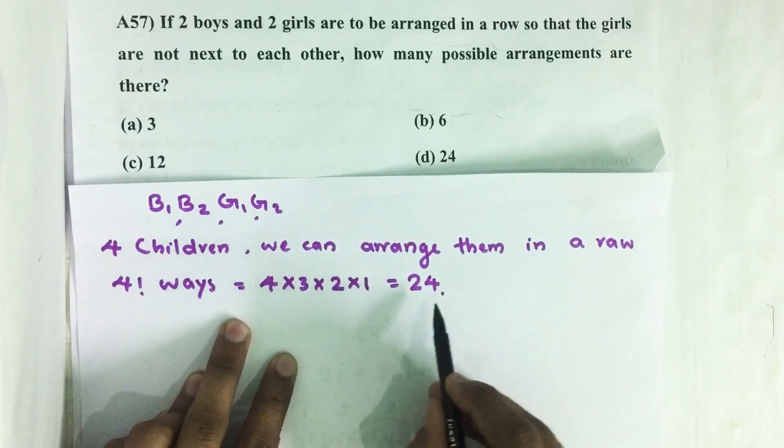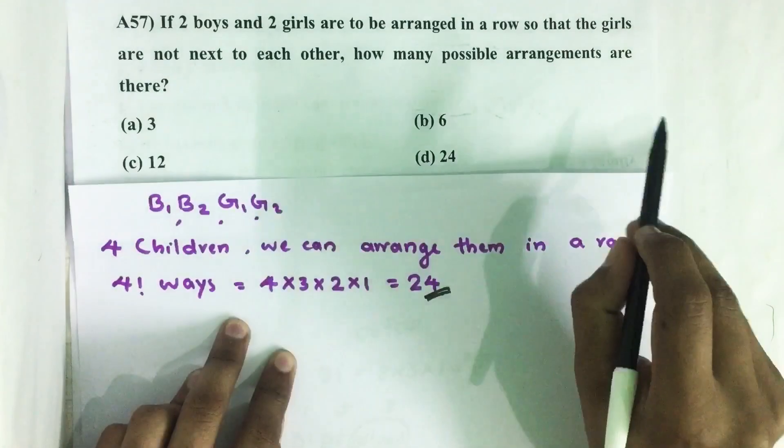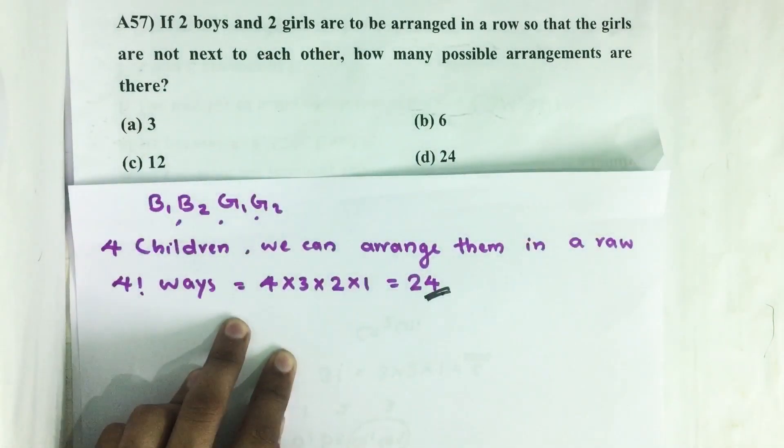4 factorial equals 4 times 3 times 2 times 1, which is 24. But here we have one condition: girls are not next to each other.